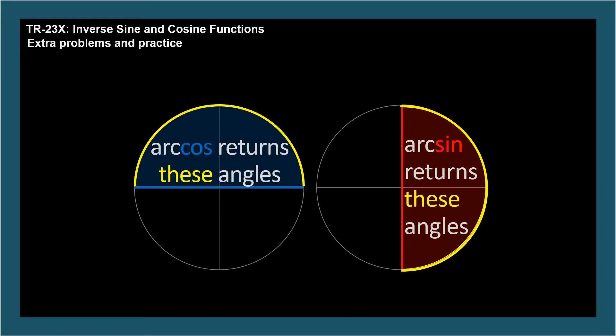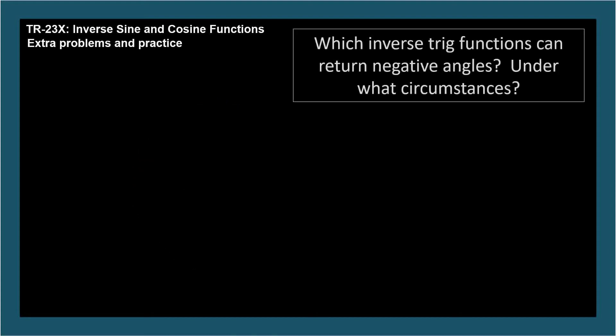Okay, that's the lecture information I couldn't fit into TR-23. Now for some practice problems. But first, a warmup exercise. Which inverse trig functions, arcsine or arccosine, can return negative angles, and under what circumstances?